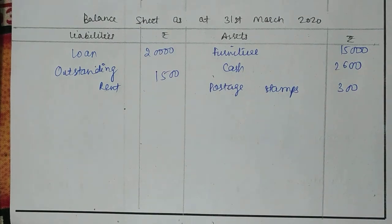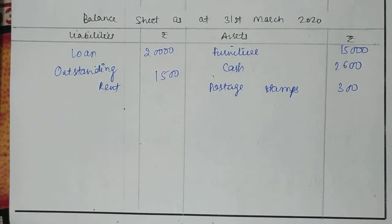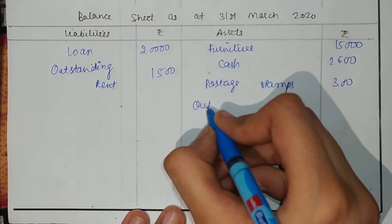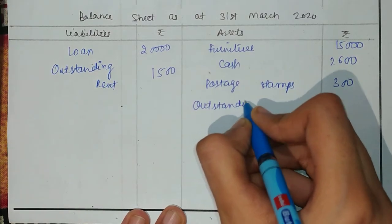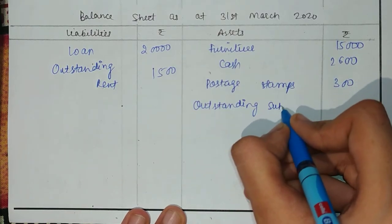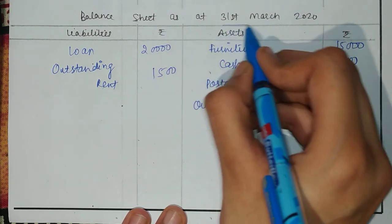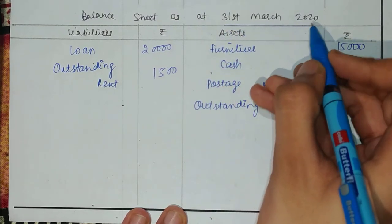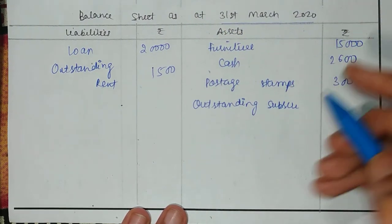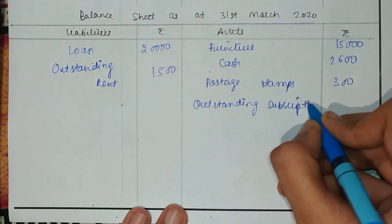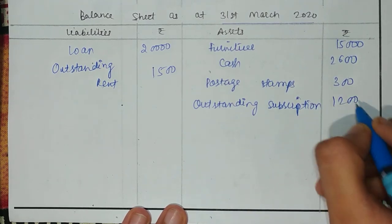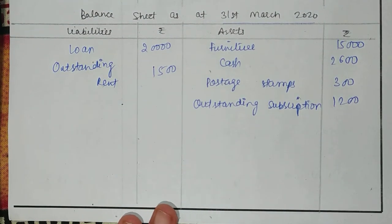Outstanding subscription will be an asset on the opening balance sheet. The amount as of 31st March 2020 — the opening — can be taken here. Outstanding subscription of $1,200 will be included on the asset side.